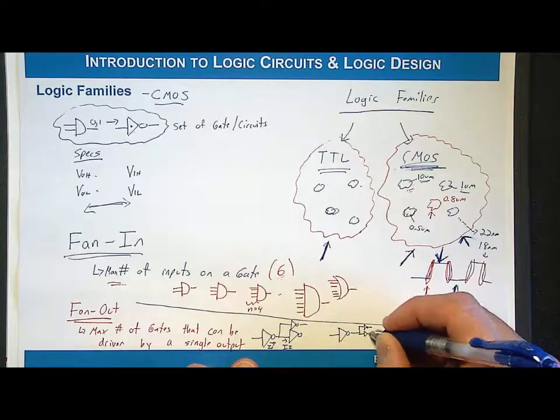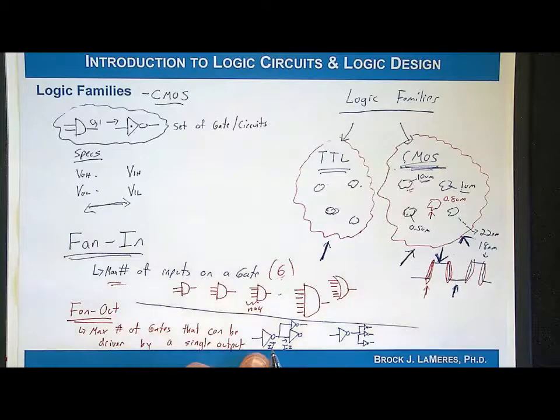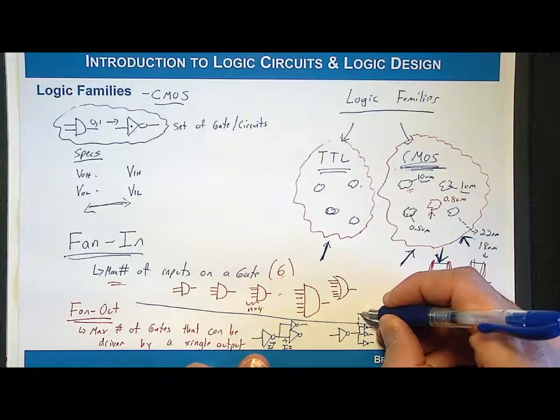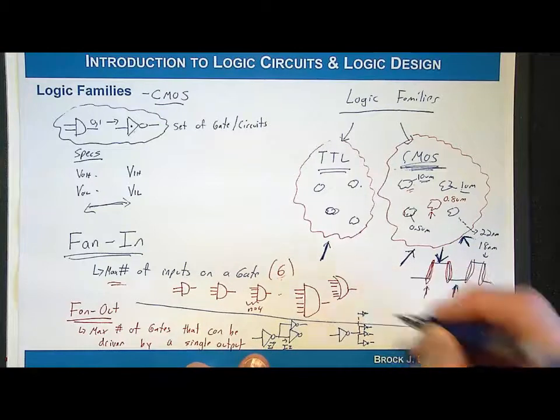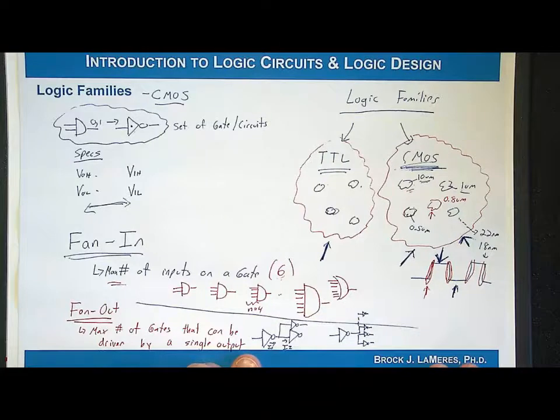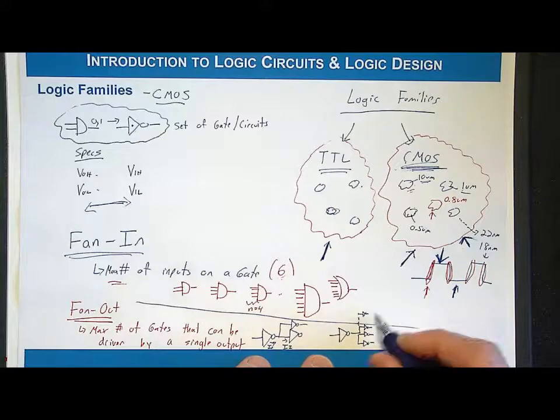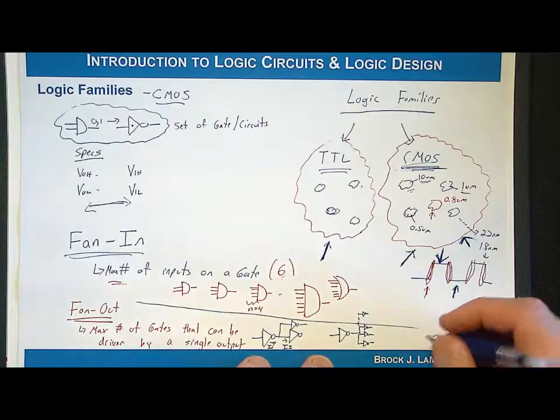The problem becomes when you start adding more and more gates. If I'm going to drive three inverters, that's fine too. I'm not going to violate any maximum current output specifications. But how many can I add? Can I add a million? A hundred million? It turns out you can't do that. The reason you can't continue to add an infinite number of loads from the same family has to do with the switching characteristics.